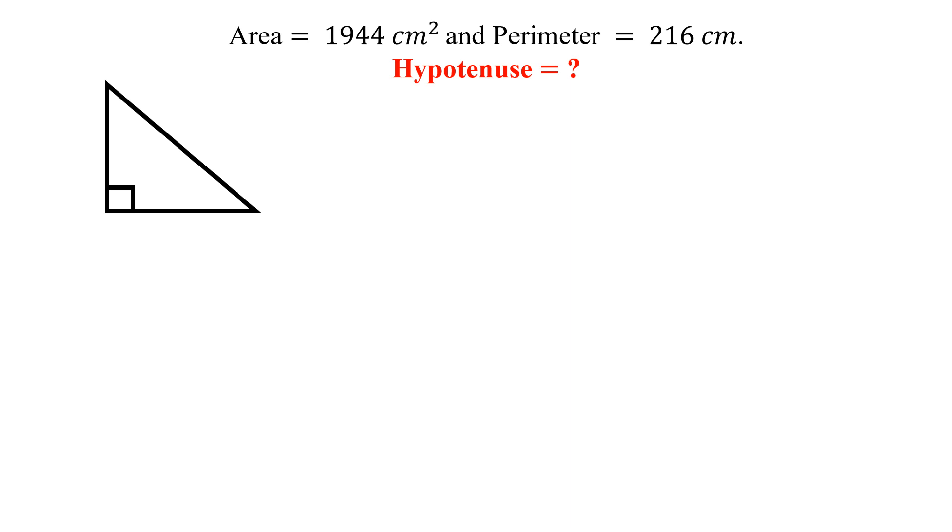The question is we have a right angle triangle and the area of this right angle triangle is 1944 centimeter square and the perimeter is 216 centimeters. What is the hypotenuse of this right angle triangle? Let this is A, this is B, and this is C.